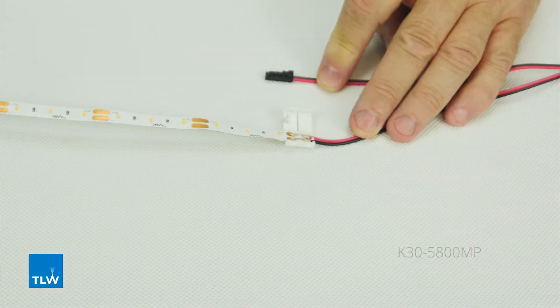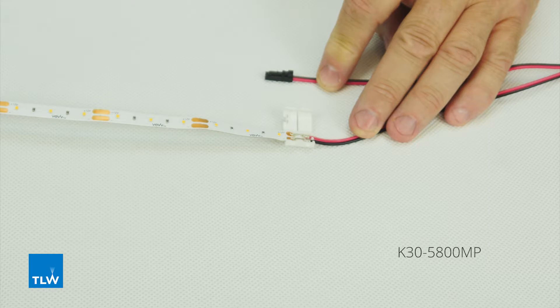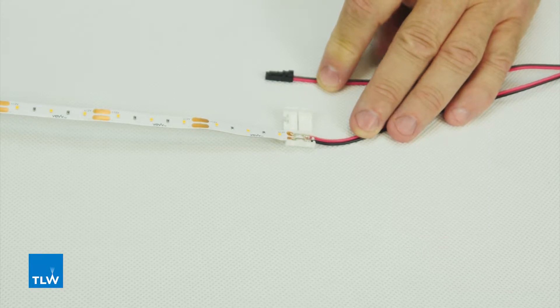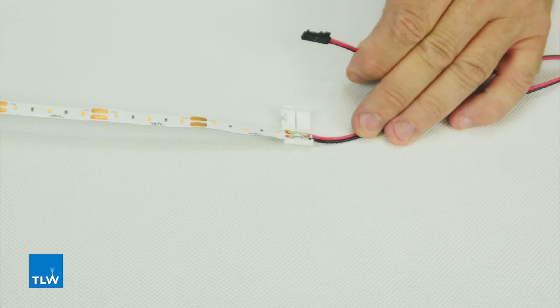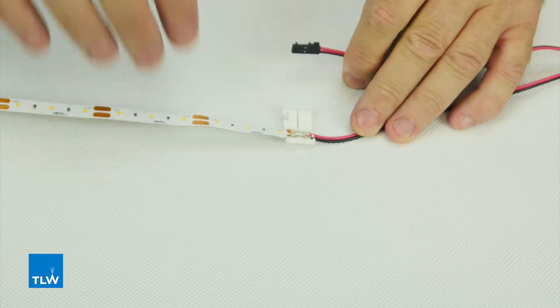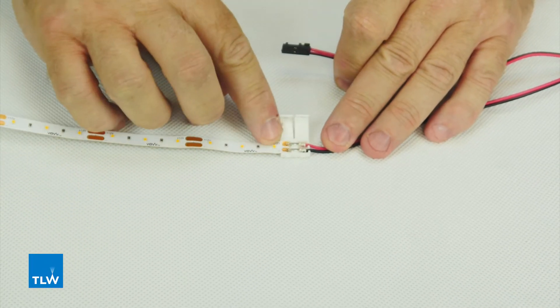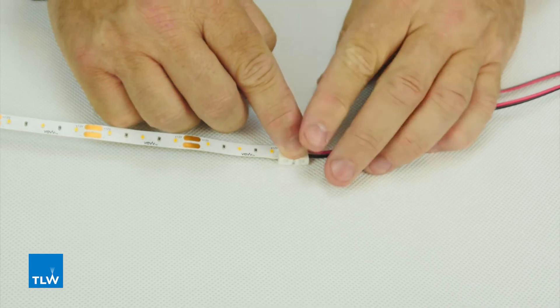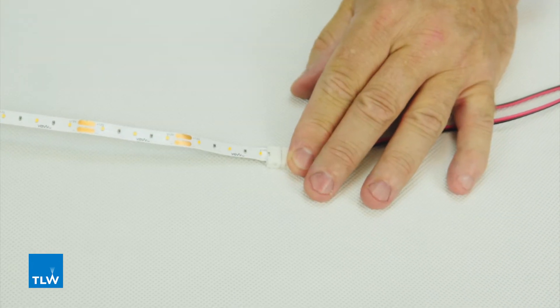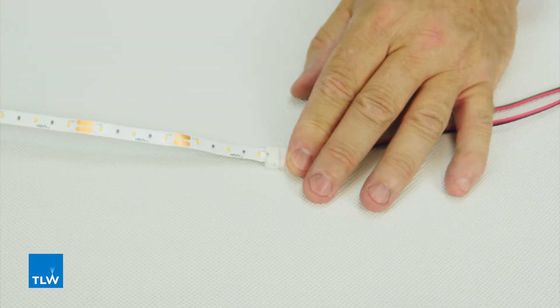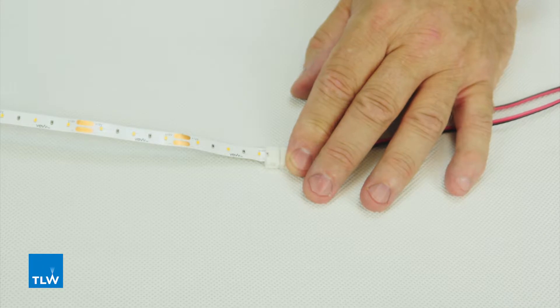Here we have a K30-5800MP, two metre driver connection cable. As you can see, there's a jack at the end which goes into the driver connection block. You push the tape in under the contactors, close it up, and you're ready to connect it to the driver. When it's connected to the driver and power source, the LED tape will light up.